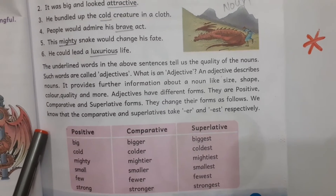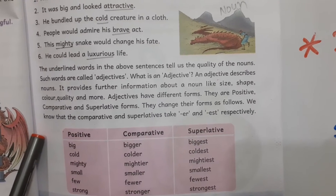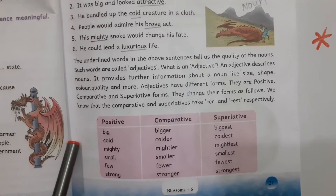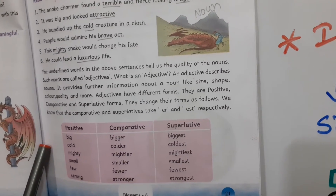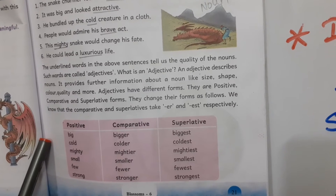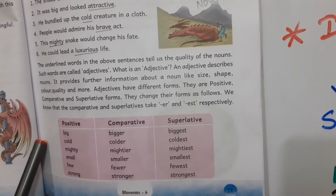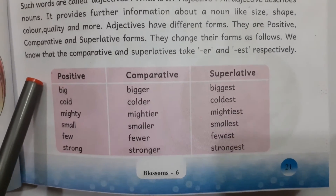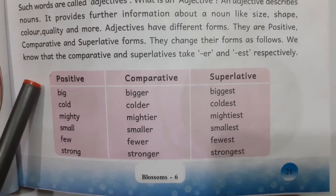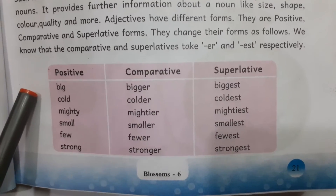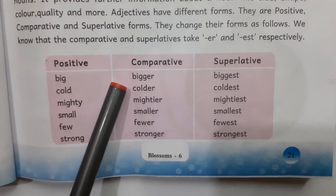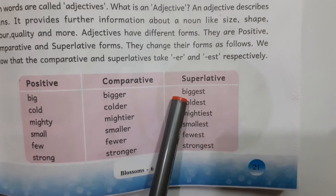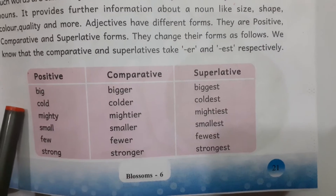The comparative and superlative forms take -ER and -EST respectively. Positive degree is compared to the comparative degree. For example: big, bigger, biggest.